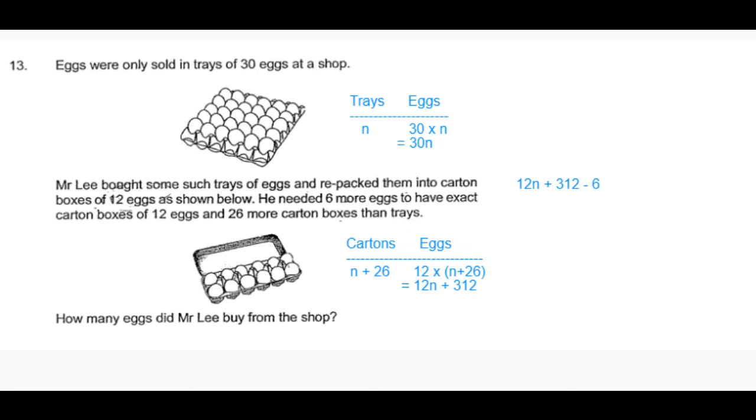The carton boxes could fill up 12n plus 312 eggs, minus 6 would be the number of eggs he bought.